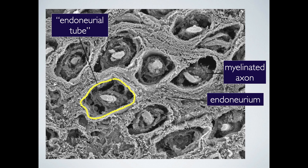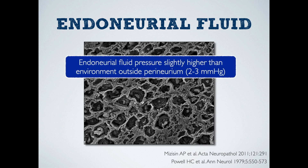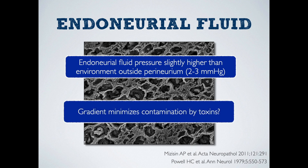Here's a micrograph of the inside of a fascicle. You can see a handful of nerve fibers — remember that's an axon plus or minus its myelinated sheath — that are surrounded and supported by the endoneurium. The endoneurial tubes are channels within the supportive matrix that act as scaffolds and are important in promoting nerve regrowth after injury. There's a small amount of fluid in the endoneurium too, which can be thought of as roughly equivalent to the CSF of the peripheral nerve.